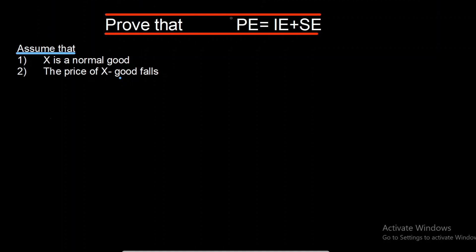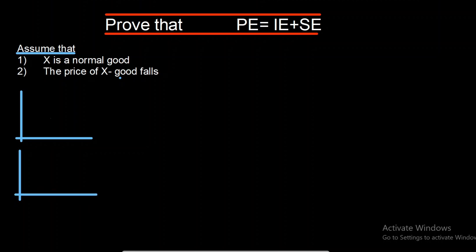If you are interested to know the same concept for price effect equals income effect plus substitution effect for normal goods, Giffen goods, and inferior goods, then look into the other videos — I'll give you the link in the description and you can see the link in the I button as well. Now first of all, keep in mind that whenever there is a price effect, two lines are pivotal to each other. I'll make the basic key that includes all three effects independently.